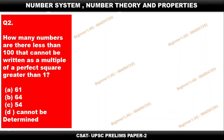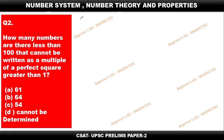Hello, welcome everyone. Let us discuss a number system problem: how many numbers are there less than 100 that cannot be written as multiples of a perfect square greater than 1? This kind of question is very important for competitive exams. The question deals with numbers less than 100, which means 1 to 99. Be careful with this — that is the first step to note.